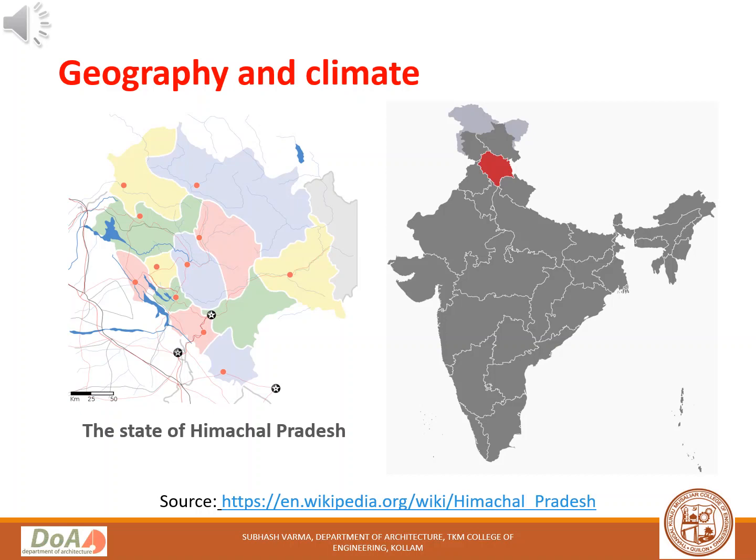Moreover, there is a general decrease in temperature as the altitude increases. In any place, the climate is determined by the temperature, wind, relative humidity, and solar radiation. In these regions, precipitation — clouds, fog, or snow — largely influences unpredictable weather.